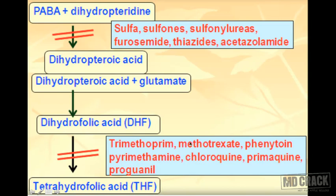Methotrexate opposes the DHF-to-THF reaction, causing deficiency of tetrahydrofolate. When phenytoin is given to a pregnant woman, the fetus suffers from tetrahydrofolic acid deficiency, leading to neural tube defects. This reaction is important to remember as it resolves many related clinical problems.